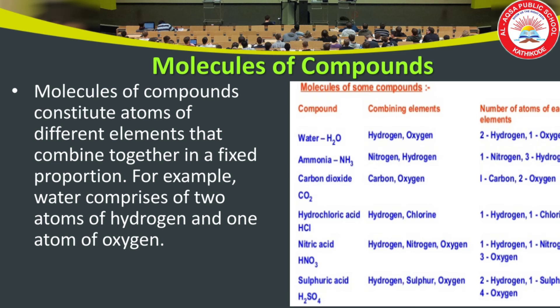Let us discuss the next topic: molecules of compounds. The molecules of compounds constitute atoms of different elements that combine together in a fixed proportion. For example, water — we can see atoms of hydrogen and oxygen in the fixed ratio of two hydrogen and one oxygen. Another example is ammonia — one atom of nitrogen and three atoms of hydrogen.